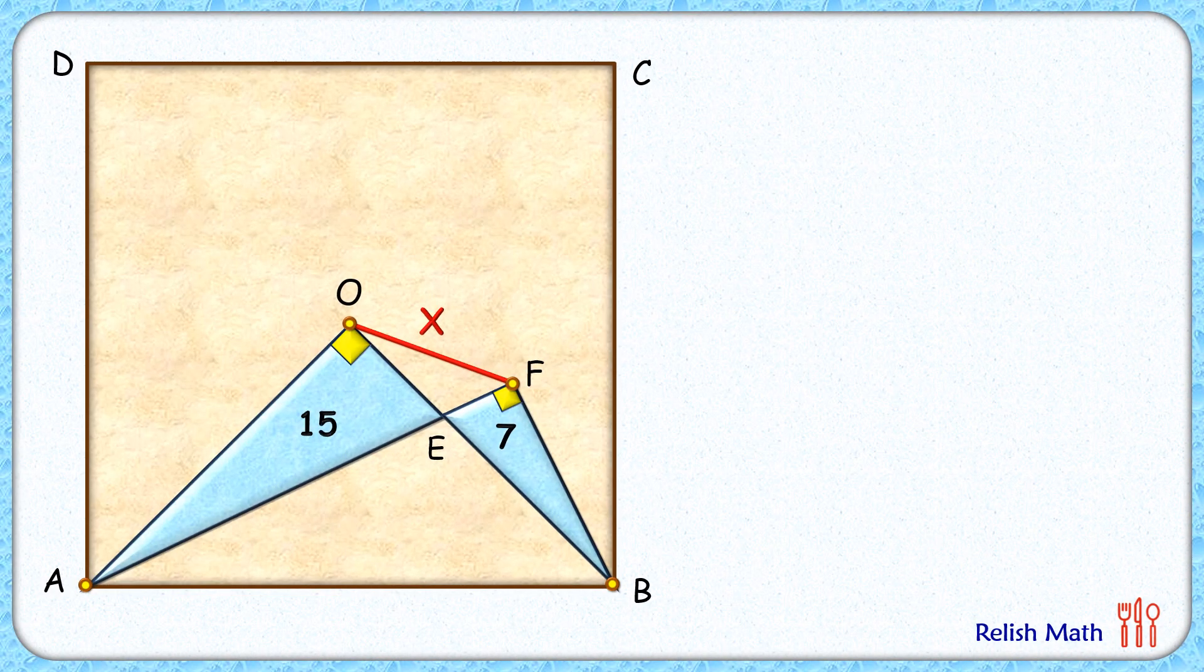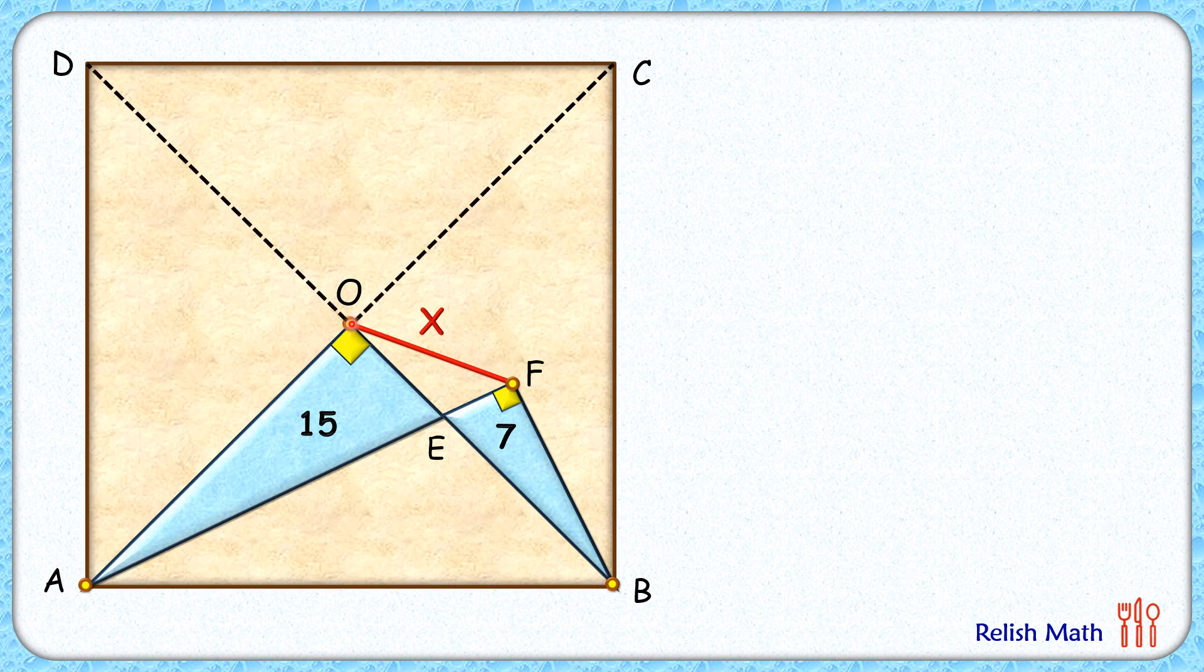Let's check this simple and elegant solution. O is given as center of the square and thus O is the point of intersection for the diagonals. Now here, let's assume AO length is a centimeter and OE length is b centimeter. But O is center of the square, and thus if AO is a centimeter, then OB will also be a centimeter, and thus EB length will be a minus b.